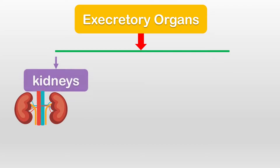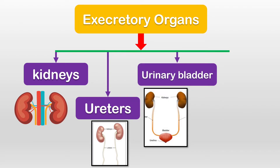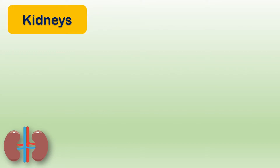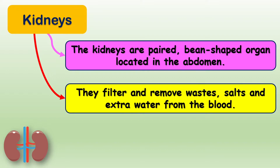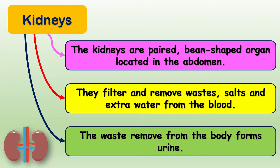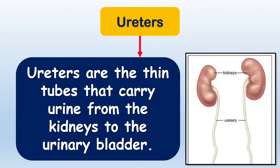The excretory organs are: kidneys, ureters, the urinary bladder, and urethra. Kidneys are pure bean-shaped organs located in the abdomen. As you can see in the picture, they filter and remove waste, salts, and extra water from the blood.